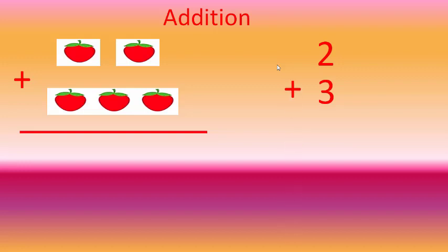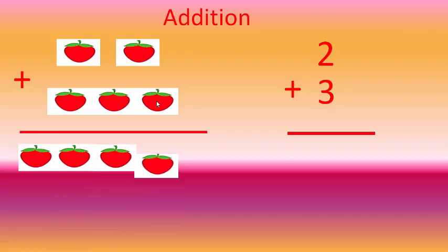And we have to add them. Let us count them: 1, 2, 3, 4, and 5. Yes, 2 plus 3 is equal to 5.